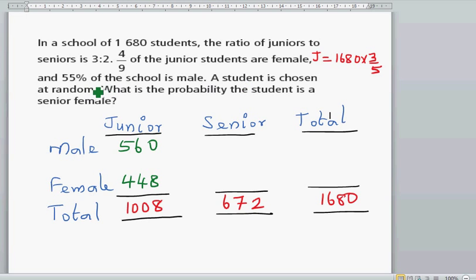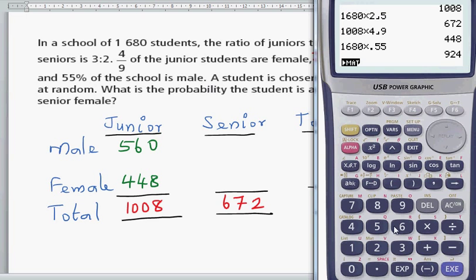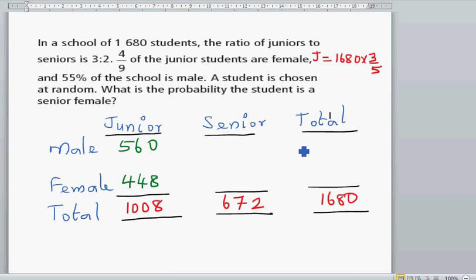55% of the school are male. So 1,680 times 0.55 is 924. So 924 are male. How many are female? Females would be 1,680 times 0.45 is 756.